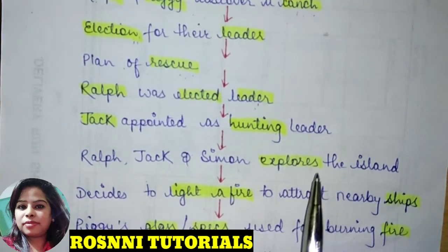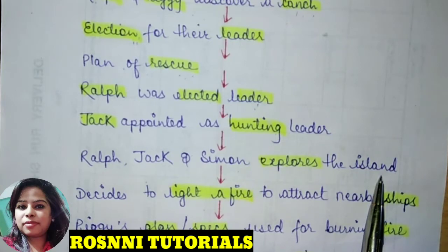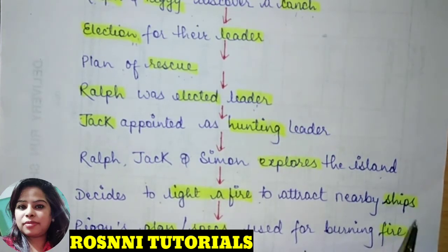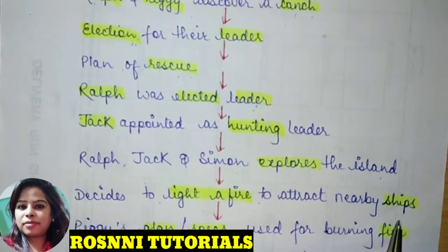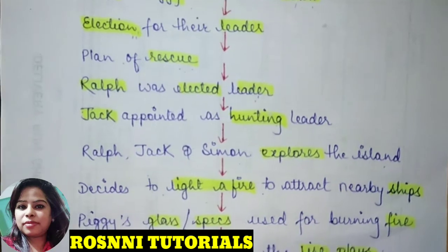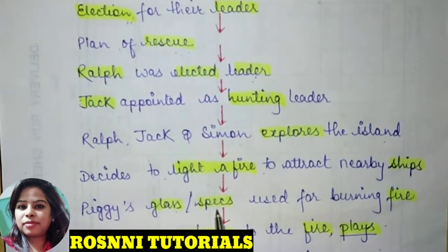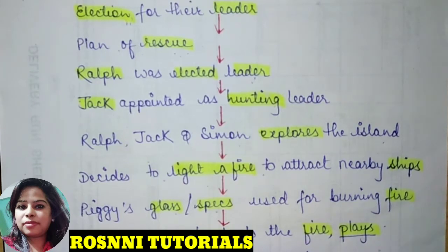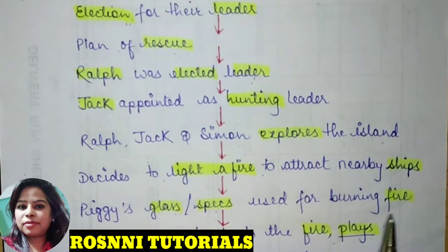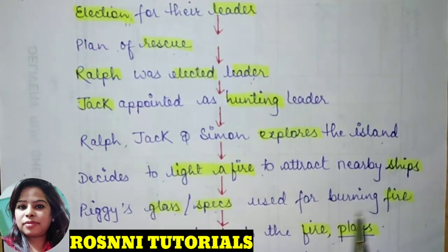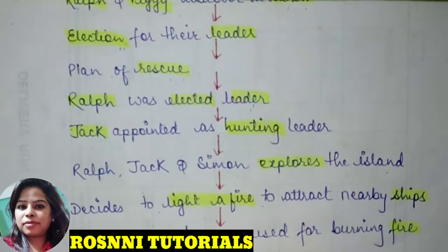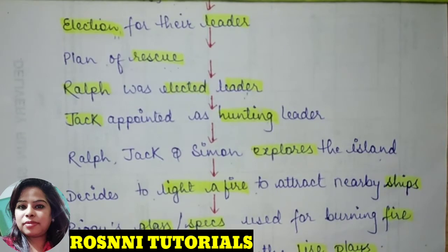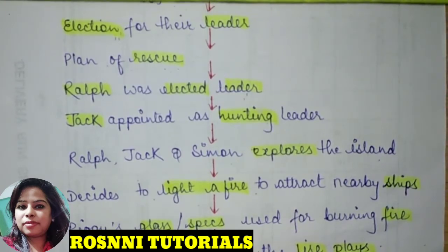Ralph, Jack, and Simon explored the island to see what was around them. They decided to light a fire to attract nearby ships and get help. Using Piggy's glasses with sunlight, they set the fire ablaze. However, the boys paid no attention to maintaining it, played instead, and the fire spread and burned the entire forest.